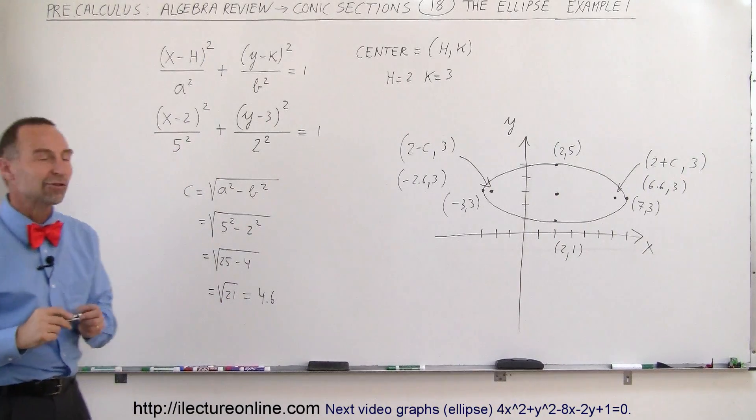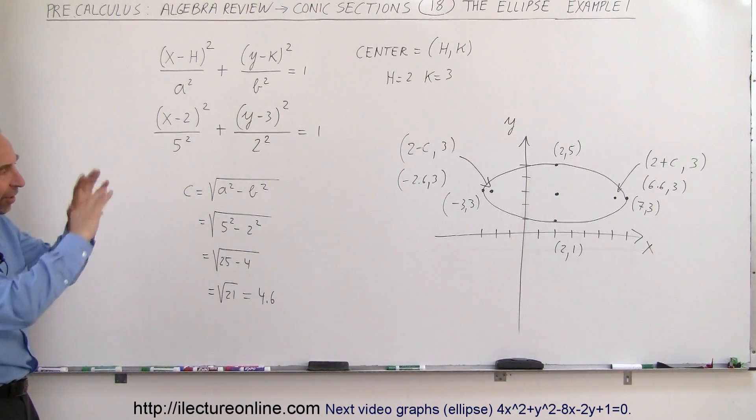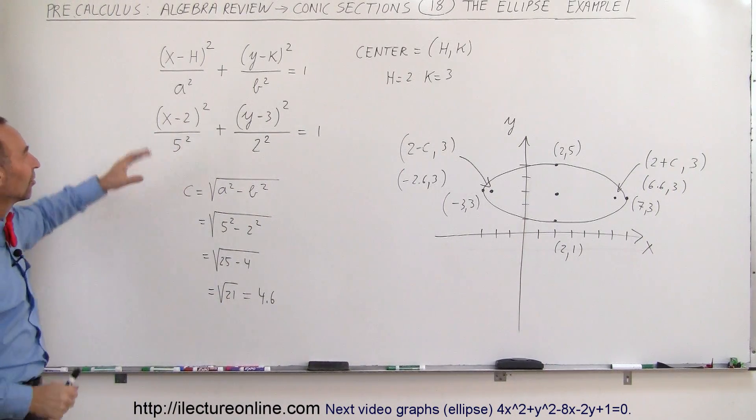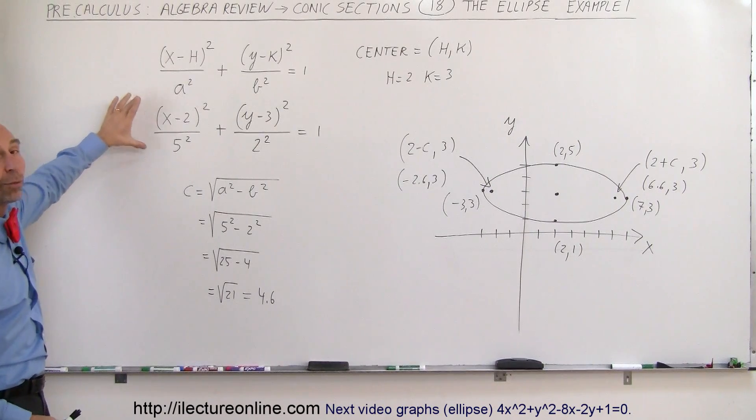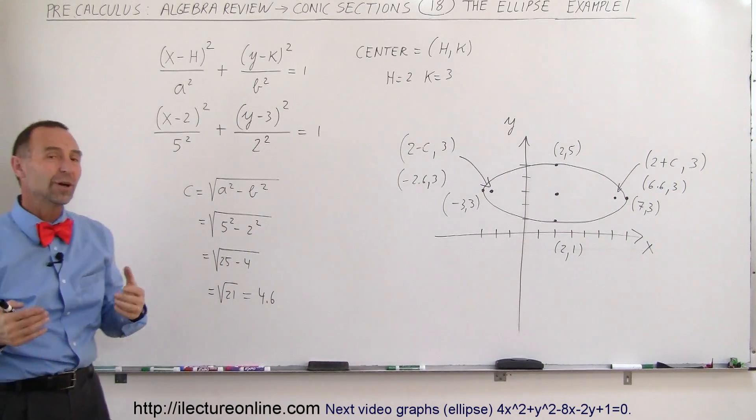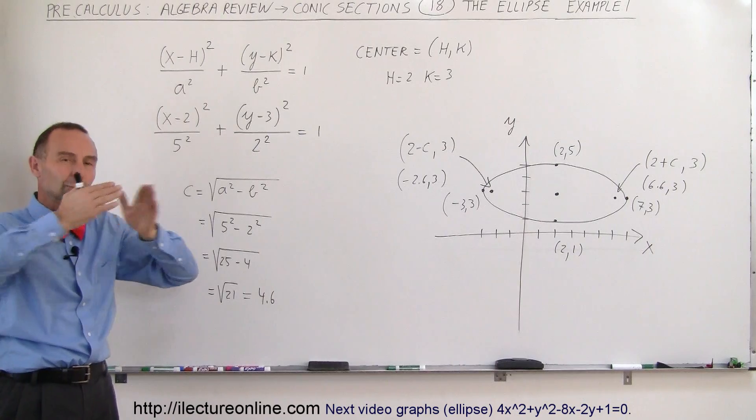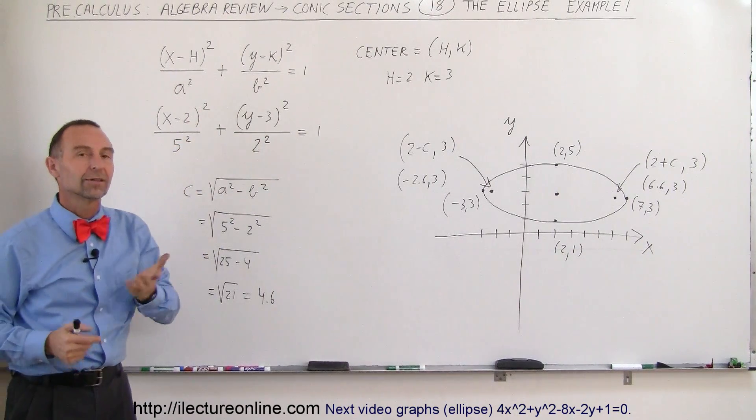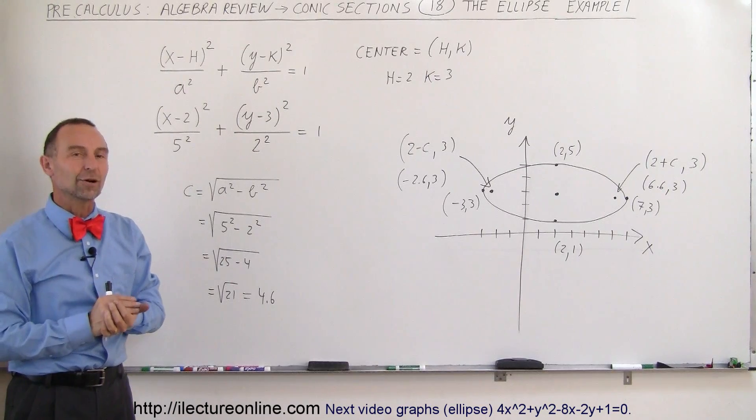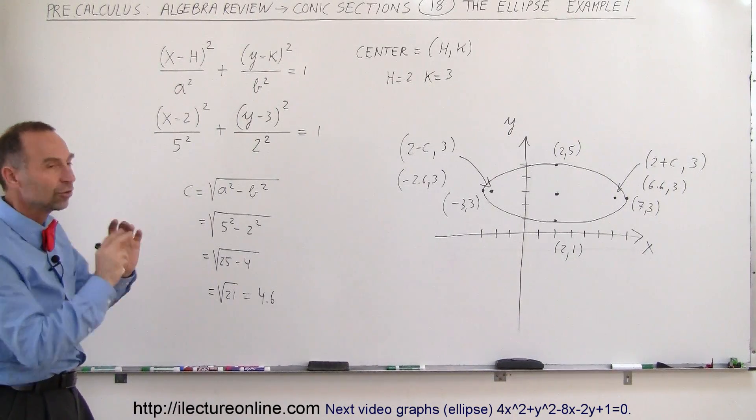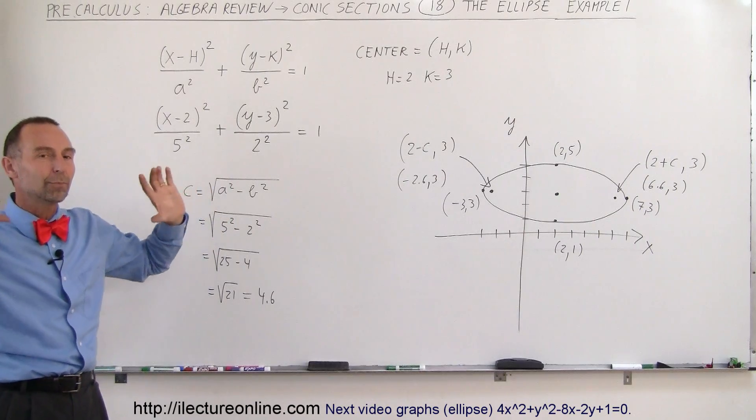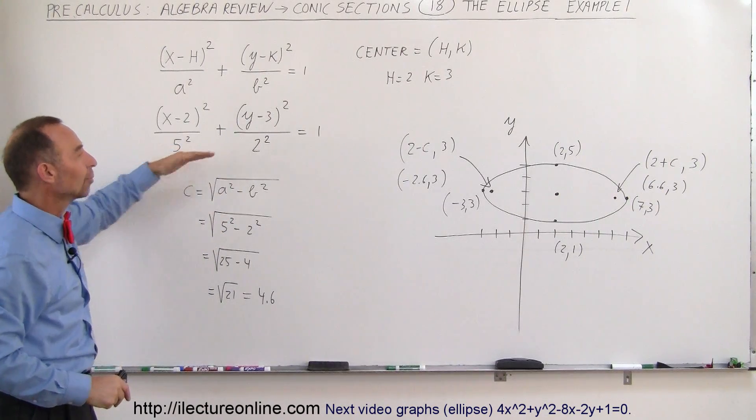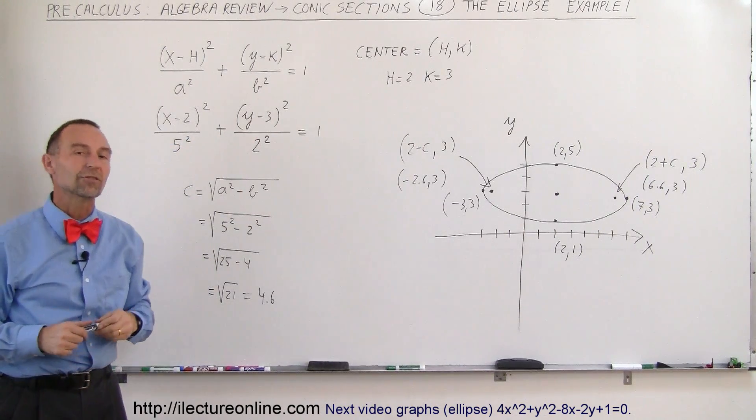So now you have all the major important points of the ellipse located at various places, simply because we have the equation in the proper form. Now, what if the equation is not in the proper form? What if it's just written out and now we have to put it in the proper form? Well, for that, we're going to see that on the next video. So if you're still interested in how to do that, take a look at the next video. We'll take a simple equation and put it into the standard form for ellipse so that we can graph it the way we just did.